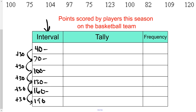So 40 plus 30 is 70, 70 plus 30 is 100, 100 plus 30 is 130, and so on. Now, if the second interval starts at 70, then the first interval must end at 69. This one goes from 70 up to — well, since the next one starts at 100, this one must end at 99.